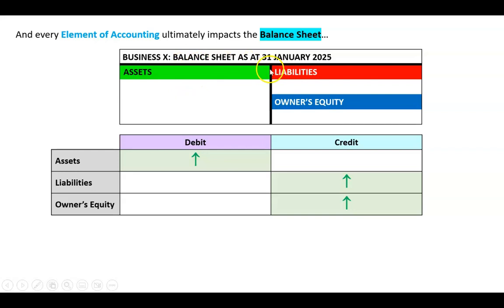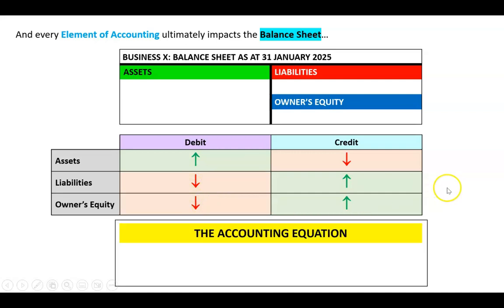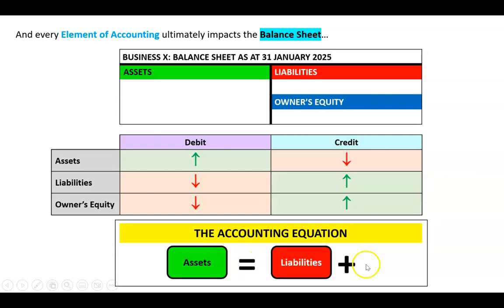Liabilities and owner's equity are the opposite of assets, so the opposite must be true. Assets go down on the credit side, and liabilities and owner's equity go down on the debit side. Because assets must always equal liabilities plus owner's equity, if assets go up on the debit side, the opposite must be true for liabilities and owner's equity. That gives us our first few rules.